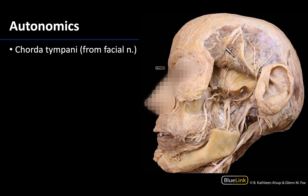Preganglionic parasympathetics originating in the glossopharyngeal nerve and destined for the parotid gland are going to synapse in this ganglion. The chorda tympani can be seen in a few very different regions, but we're going to focus on identifying it in the infratemporal fossa, which we are looking at here. You can see V3 right here, and many of its branches going all over the place, and kind of coming out of the blue over here, and going deep to the IAN and to the lingual nerve will be the chorda tympani.